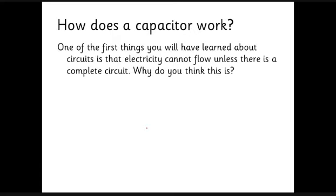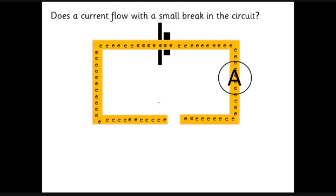We need to start off by getting our heads very clearly around the idea of what a capacitor does and how it works. One of the first things you did in year five or year six was learning that unless there's a complete circuit you can't get an electric current flowing. Think about what you know about electricity now — why is it that if you haven't got a complete circuit, a light bulb won't light up? This little model will give us an idea. Here's our circuit — we've got a gap here so the electrons can't just flow around.